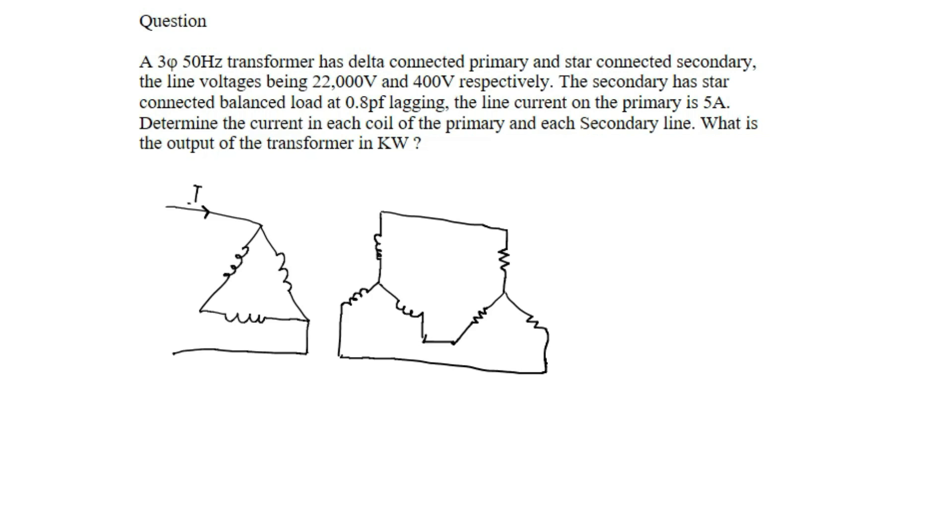Here the current in the primary, that is I1 line, is 5 amperes. We are asked to find the phase current. On the secondary side we are also asked to find the phase current, but here you can see that the phase current equals the line current.